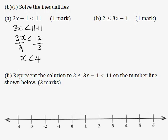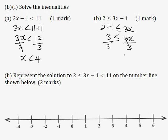Now solving 2 ≤ 3x minus 1 for one mark. Taking minus 1 to the left-hand side, it becomes positive: 2 plus 1 is less than or equal to 3x. So 3 ≤ 3x. Dividing both sides by 3 gives 1 ≤ x.